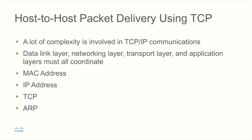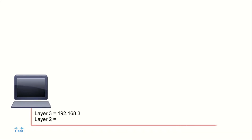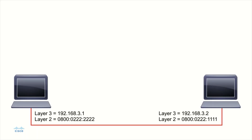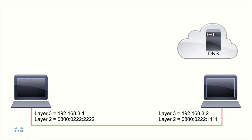So let's take a look at the host-to-host packet delivery process using TCP and simplify this to some degree. As we go through this, we're going to see exactly how data is transferred on a network and how two end systems can coordinate this packet delivery. We're going to begin with two computers on the network that want to talk to each other, and we're going to have a DNS server that will provide some resolution for us.